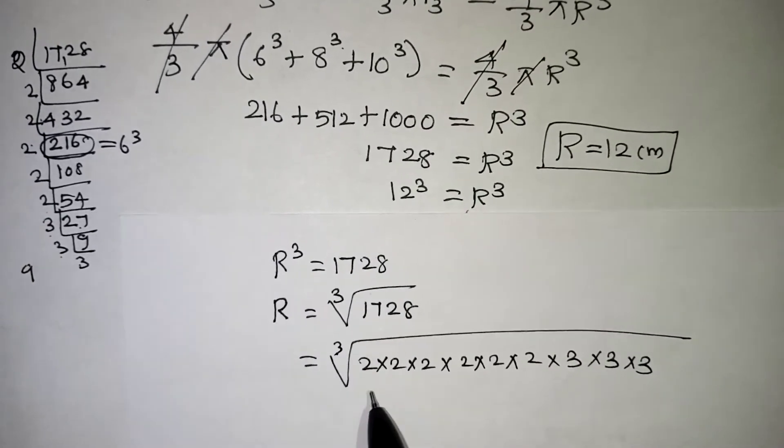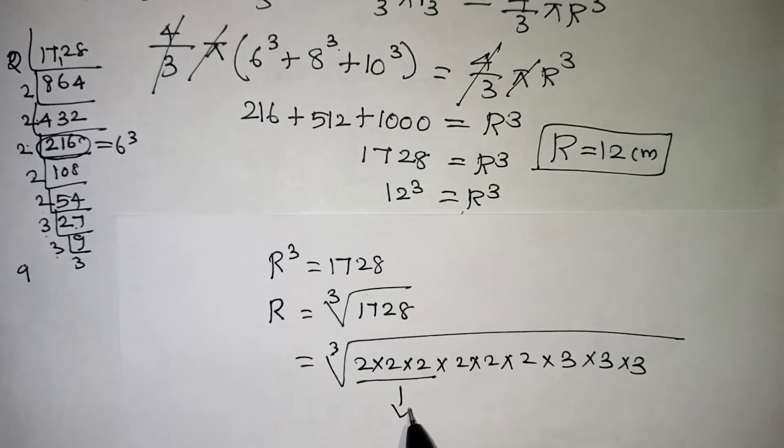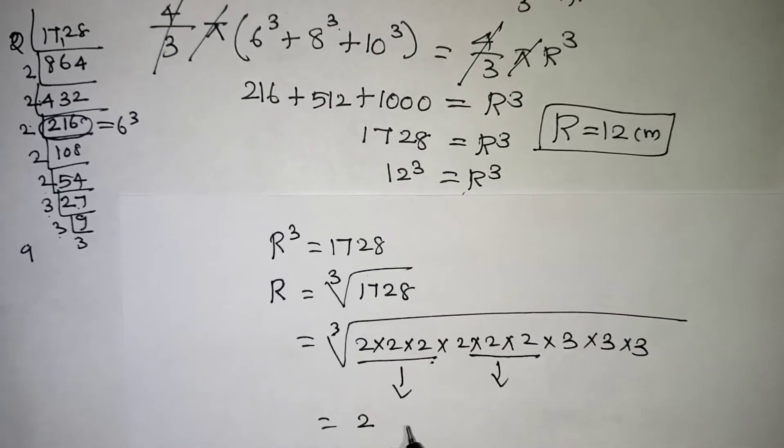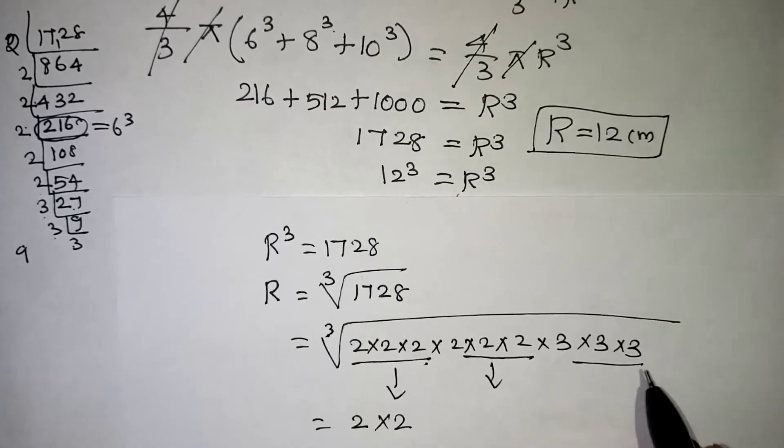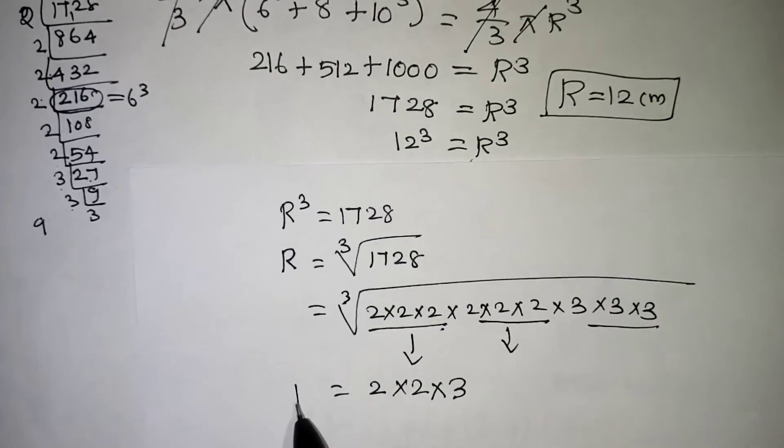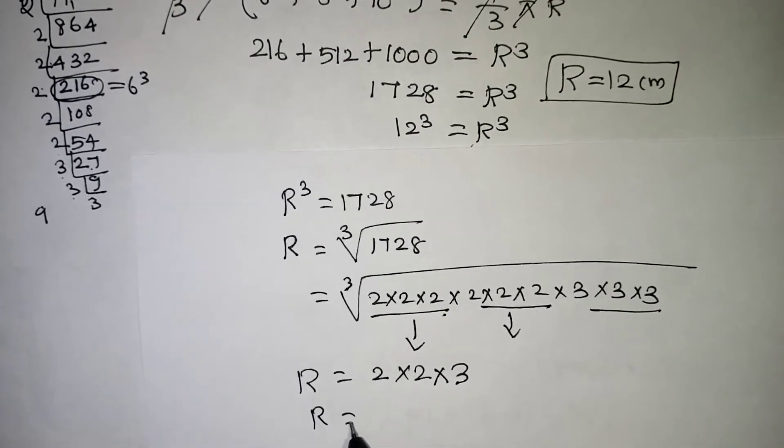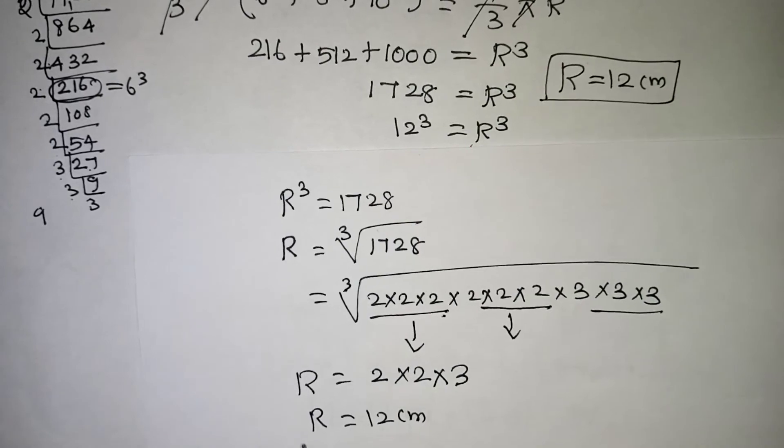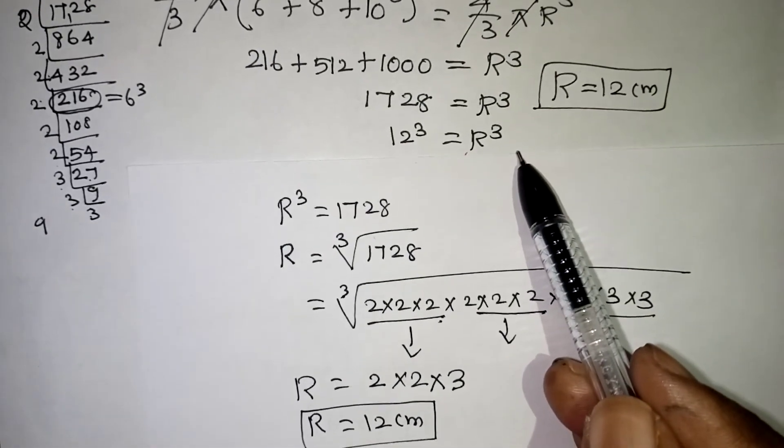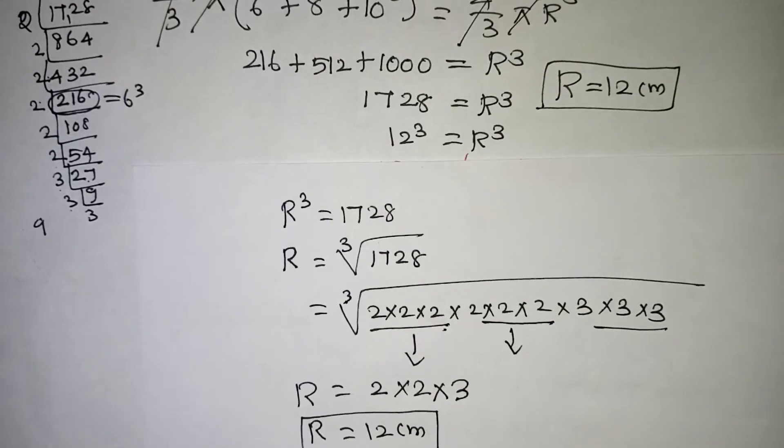Now since it is a cube root, once in 3 numbers, 1 number will come out. For these 3 twos, 1 two we have to take out. For these 3 twos, 1 more two we have to take out. For these 3 threes, you have to take 1 more 3 outside. Now this is the value of your R. 2 twos are 4, and 4 threes are 12. 12 cm we are getting it correctly. If you know the cube value, within a minute you can complete the problem. If you don't know, you have to go in the prime factorization method.